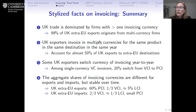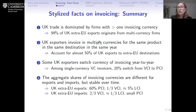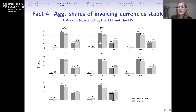Third, if we look at UK firms that use only one currency for an entire calendar year and examine how frequently they switch from one year to the next, we find, for example, that 20% of firms invoicing in vehicle currencies in year T have switched to producer currency invoicing (pound sterling) in year T+1. Our fourth fact validates the aggregate shares: over eight years, they're quite stable for the UK — roughly 60% of UK export value is in sterling, a third is invoiced in a major currency like the dollar or euro, and about 5% is local currency invoiced transactions.